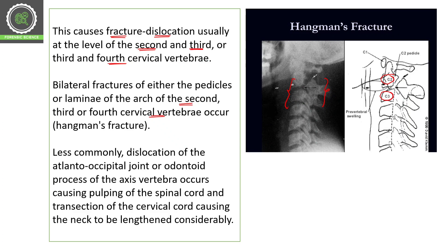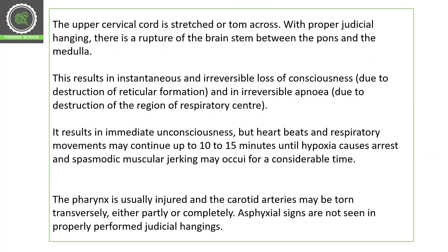Less commonly, dislocation of the atlantooccipital joint or the odontoid process of the axis vertebra occurs. This causes compression of the spinal cord and transection of the cervical cord, causing the neck to be lengthened considerably, breaking that connection and causing the person to suddenly become unconscious.